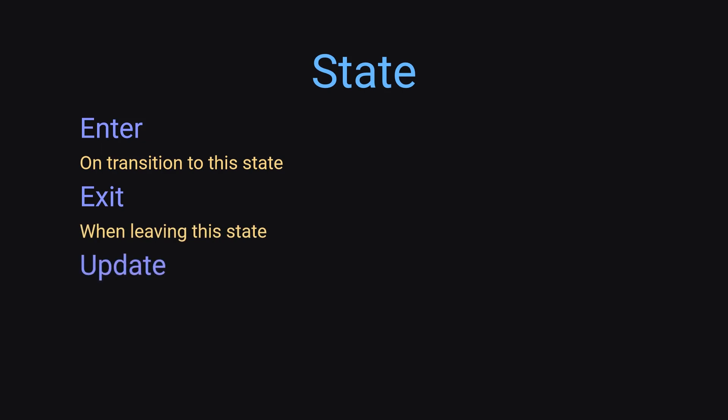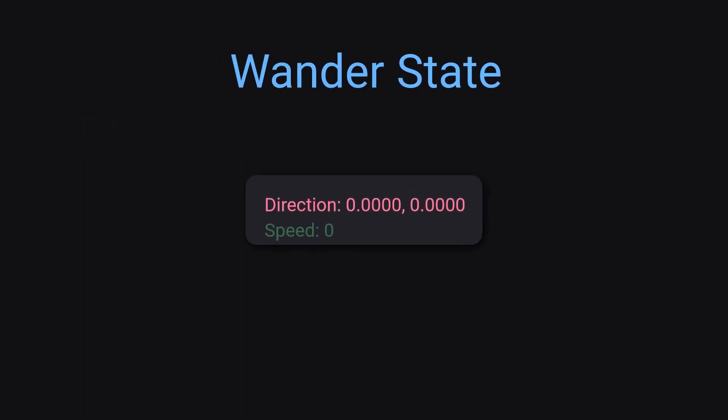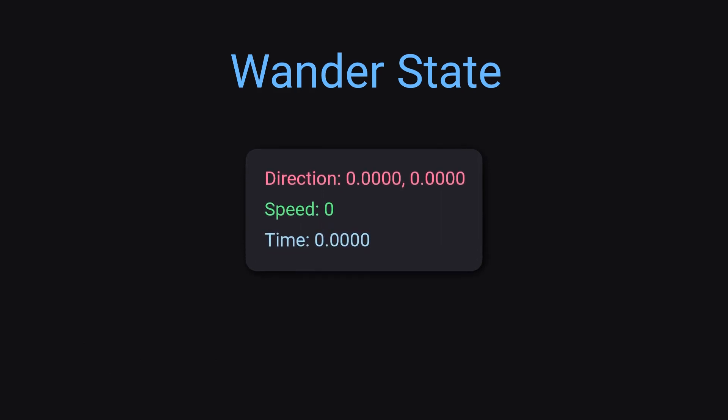That's kind of how we would split things up in code. We would have a state class, and inside of the state class we would have a couple of methods. The first two are enter and exit, which are called when we transition to a state and leave from a state. Then we'll have two more functions: update and physics update. The update is tied to the visual frame rate, whereas the physics update is tied to the physics server. Each state can also have its own relevant information — for example, the wandering state would probably have a random direction, a speed, and a timer for it to wander.